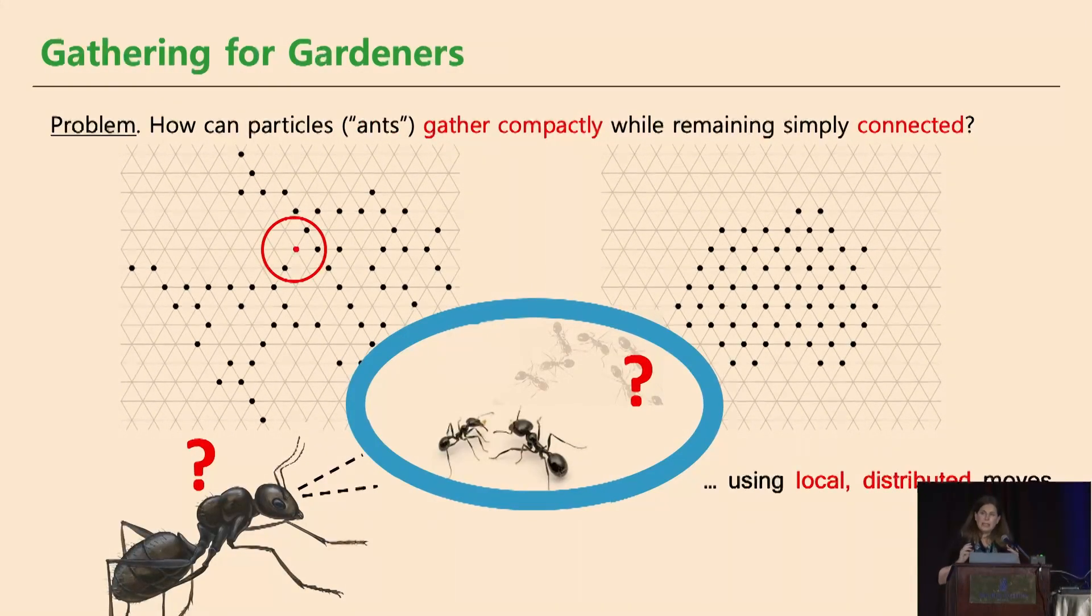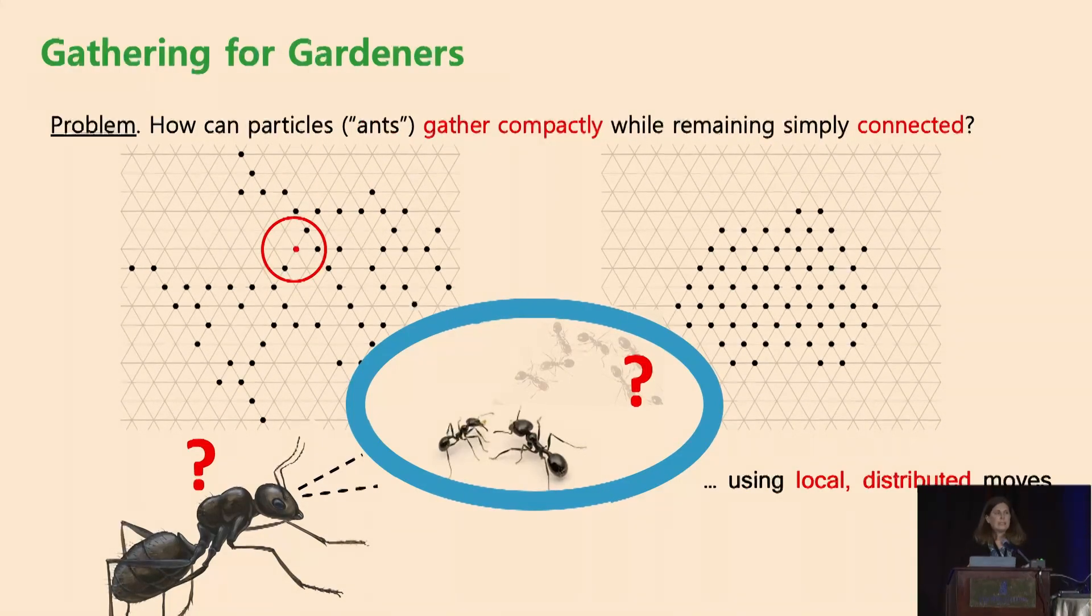But the trick is that each ant is acting individually. There's no puppeteer controlling this, and they only see locally. So each ant sees its immediate neighbors and cannot see anything farther. So it wants to do this in a distributed, local way. It has very limited memory.